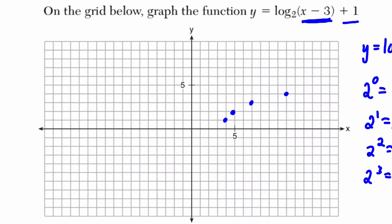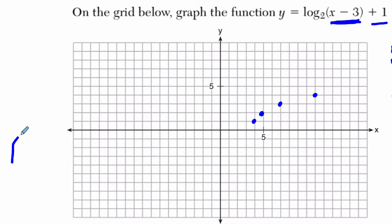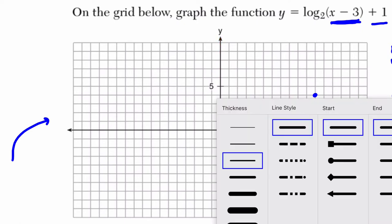Now before I connect these and draw the general shape of a logarithm, which is something like this, think about the asymptote. Originally, the logarithm has an asymptote at the line x equals 0. So let's draw a quick line.